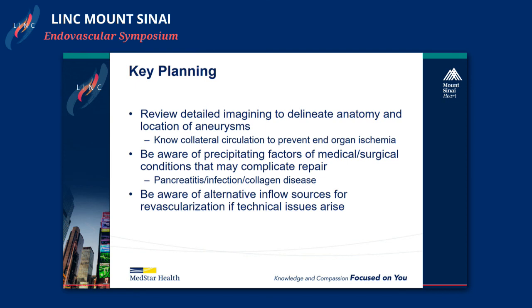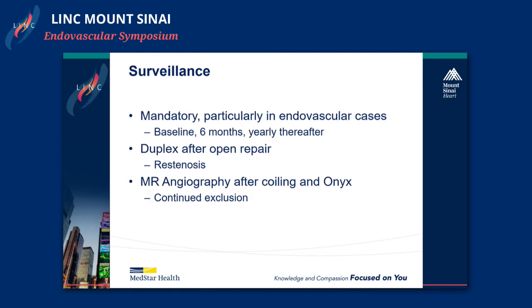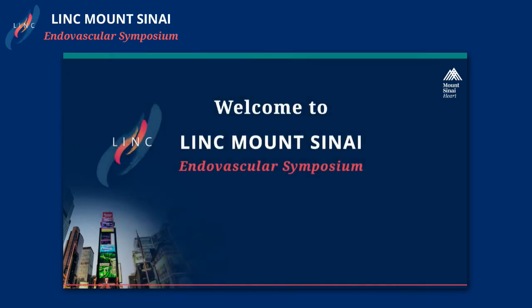You do have to plan these cases out well. Review detailed imaging to delineate anatomy and the location of the aneurysms. You should know the collateral circulation to prevent end organ ischemia. Also be aware of alternative inflow sources if you need to revascularize or if technical issues arise. Surveillance is really mandatory, particularly in endovascular cases — baseline, six months, then yearly. Duplex after an open repair to look for restenosis, and MR angiography after coiling and Onyx, because CT may not give you a good picture. Thank you very much.